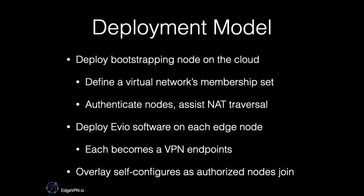How is an EVO virtual network deployed? You need a bootstrapping node that defines who is a member of the virtual network and allows nodes to authenticate. It also assists in creating tunnels that traverse NATs across the internet. This bootstrapping node is typically deployed on the cloud — for example, Amazon Web Services.